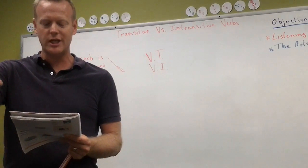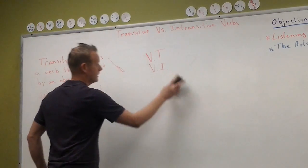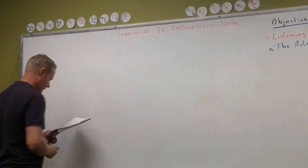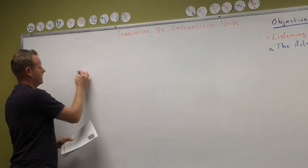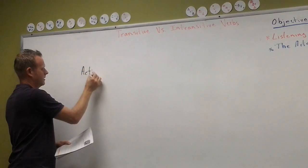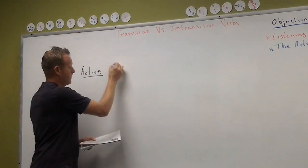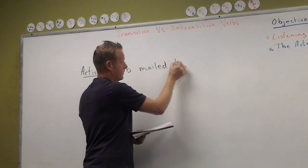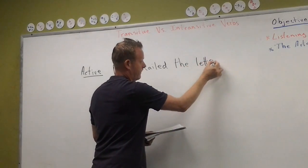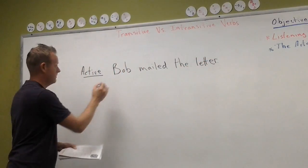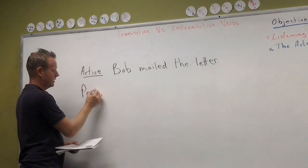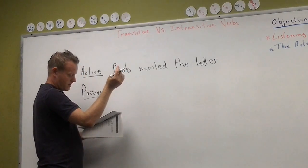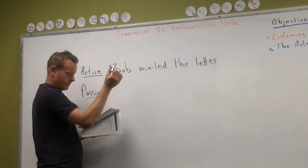Now read sections G and H. Transitive verbs — active: 'Bob mailed the letter.' Passive: 'The letter was mailed by Bob.' Only transitive verbs can be used in the passive. An intransitive verb is not used in the passive.